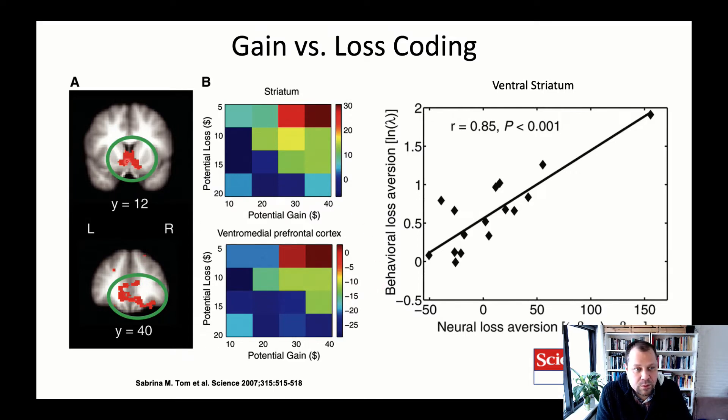You can go even a step further and look at this region here, the ventral striatum, and then correlate behavioral loss aversion—which is lambda, the prospect theory loss aversion parameter—and correlate that with neural loss aversion, which is the activation intensity of this region during gains relative to during losses. You see that this correlates quite highly here. Now, you have to be a bit careful with such low numbers of participants and an outlier here. This is probably an overestimation, but this has been replicated a number of times now, so it's likely not a false positive.